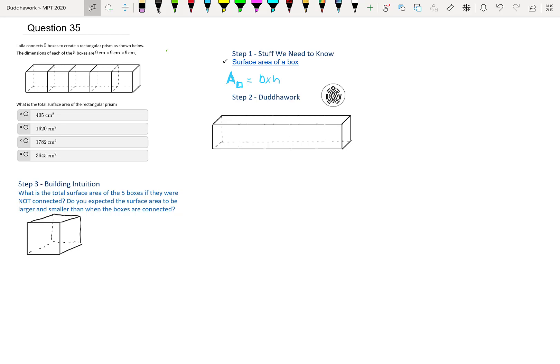We're going to tackle this problem where Layla connects 5 boxes to create a rectangular prism as shown below. The dimensions of each box are 9 cm x 9 cm x 9 cm. What is the total surface area of the rectangular prism?